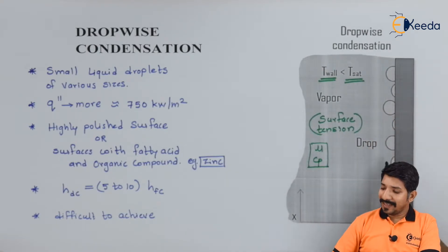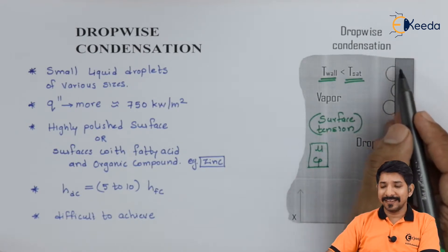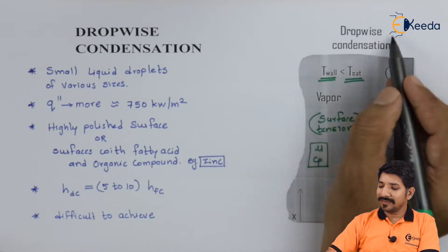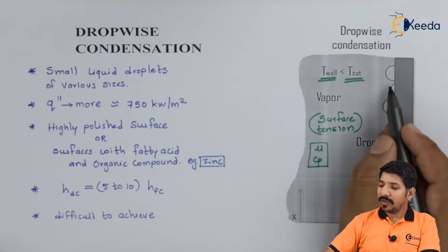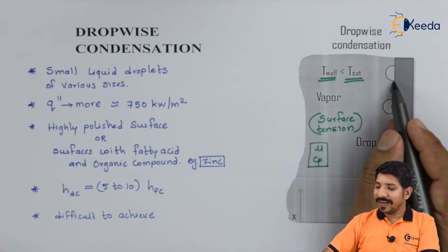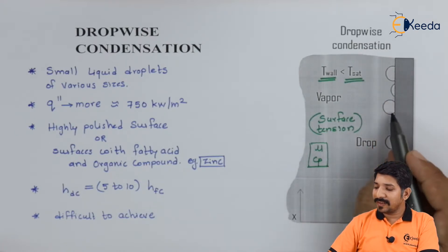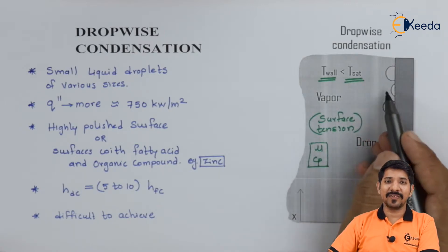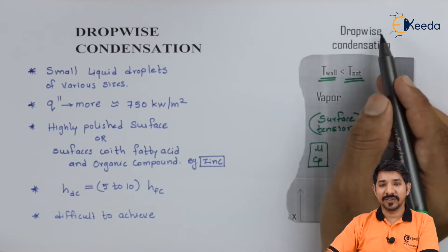The important point to understand in drop-wise condensation is that small droplets are formed over a surface, so it will never wet the entire surface. A small area of the surface will always be exposed to the vapor, and that will enhance the heat transfer rate in case of drop-wise condensation.